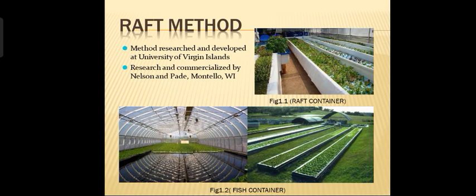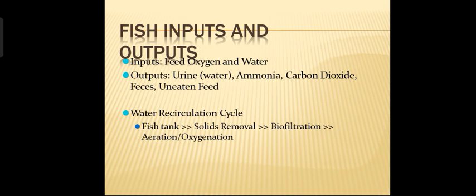As you can see in this image, there will be a raft container and a fish container. Regarding fish input and output: the inputs given to the fish are feed, oxygen, and water. The outputs from the fish are urine water, ammonia, carbon dioxide, feces, and uneaten feed. Water is in a recirculation cycle, and the output from the fish is used as fertilizer for the plants.